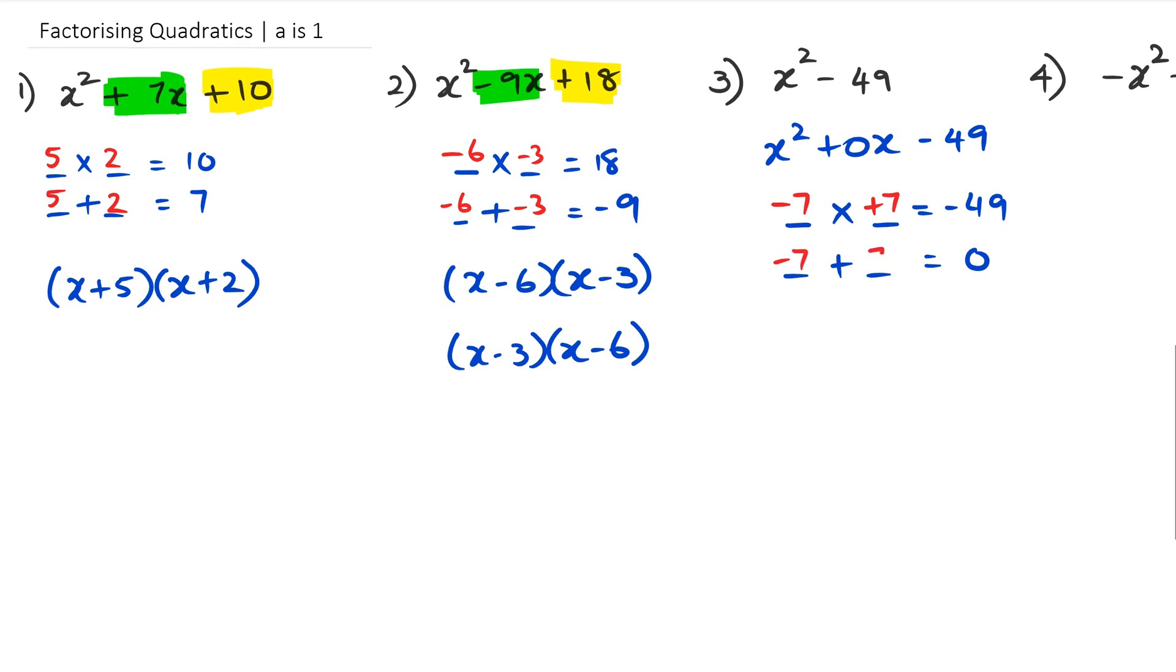We can straightaway see that in this case it's going to be negative 7 and positive 7, and negative 7 plus 7 is equal to zero. So this is what I mean by difference of two squares.